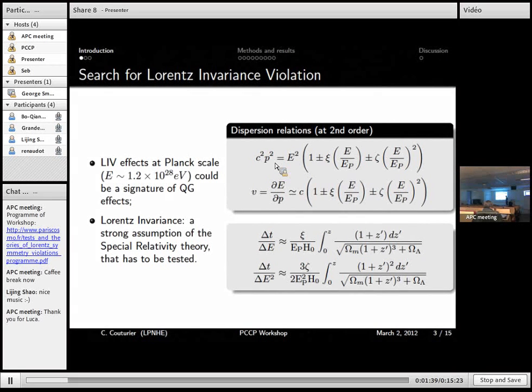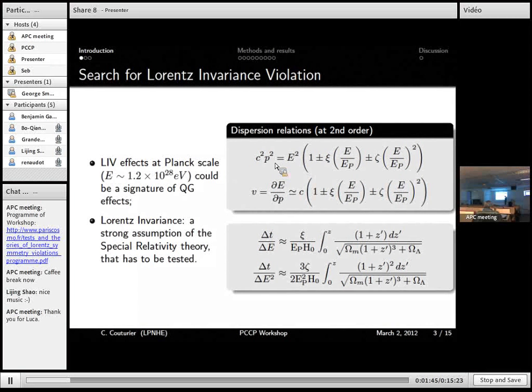So here is a formula we use, like a relation between the difference of time arrival of two photons and the difference of their energies. So this depends on the Planck scale, the Planck mass, the Hubble constant, and this term that increases with redshift.